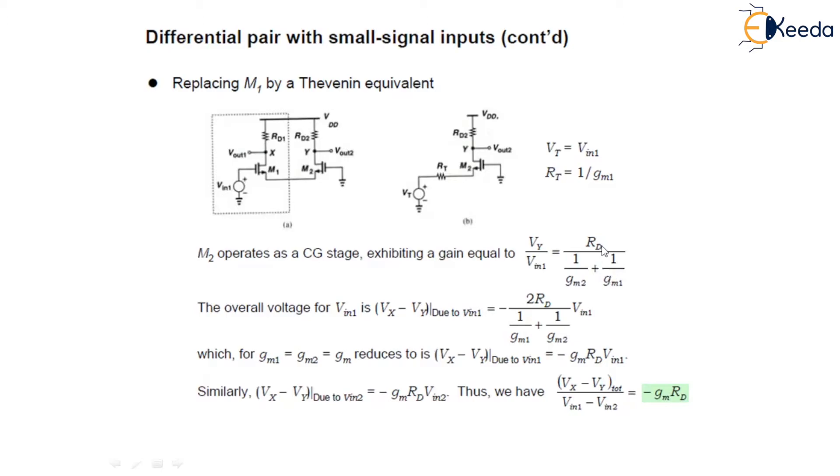It follows from both the previous equations that the overall voltage gain for Vin1 can be calculated as Vx minus Vy due to Vin1 equals minus twice Rd Vin1 upon 1 by Gm1 plus 1 upon Gm2. Now, when Gm1 equals Gm2, it reduces to Vx minus Vy due to Vin1 equals minus GmRd Vin1.